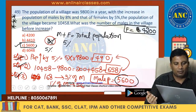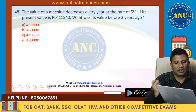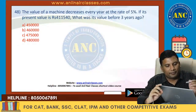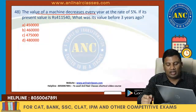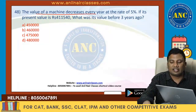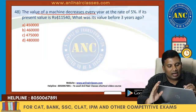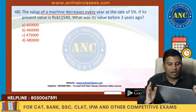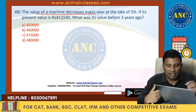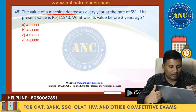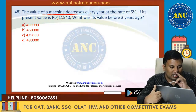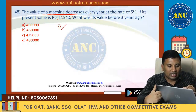Cinema theater questions done. Now population-based questions. The value of a machine decreases every year at the rate of 5%. If the present value is 4,11,540, what was the value 3 years ago? Right now there is a 5% drop every year.